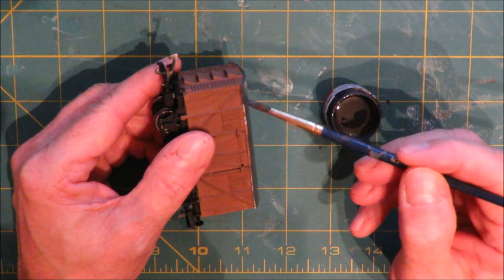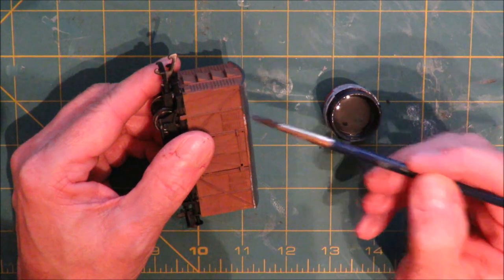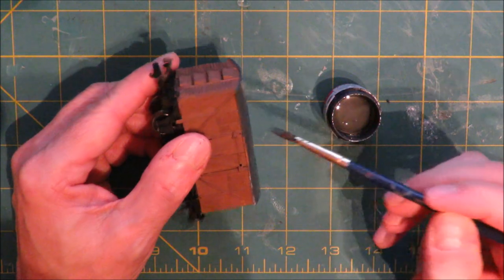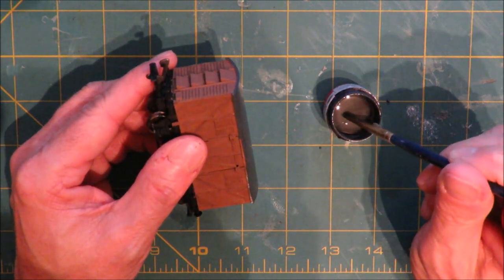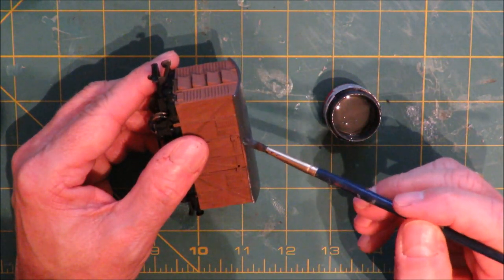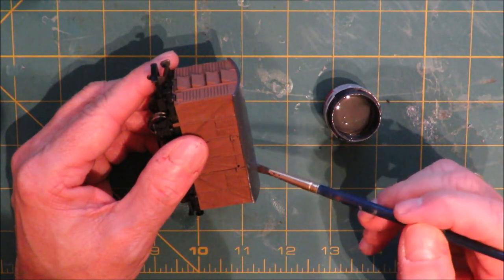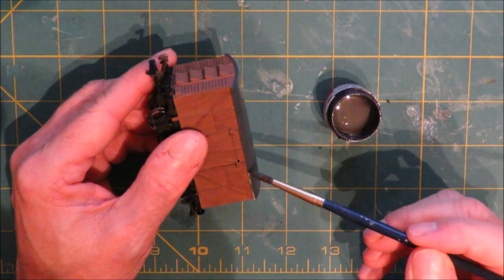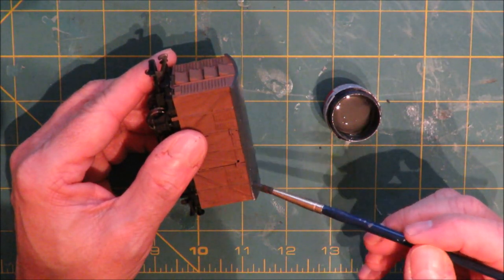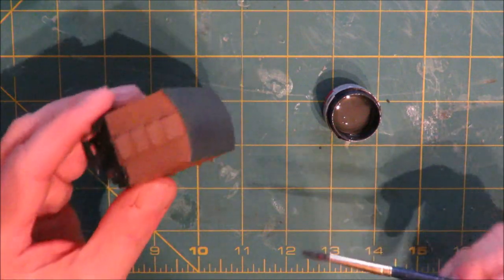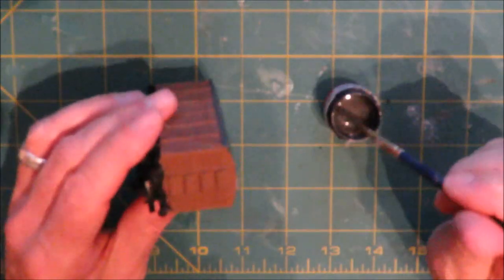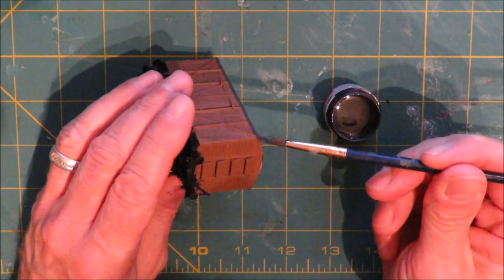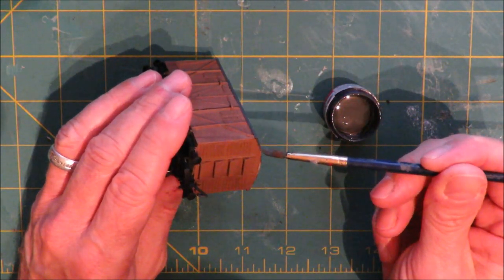And there we go, just do the other bits. One of the reasons I generally prefer the Humbrol colors is the Tamiya sometimes can be a bit thin, whereas the Humbrol often you only need one coat. There we go, it's all practice. Doesn't really matter if you don't make a good job of it, they're your wagons. Practice makes perfect, and always remember you can always paint over it and do it again.